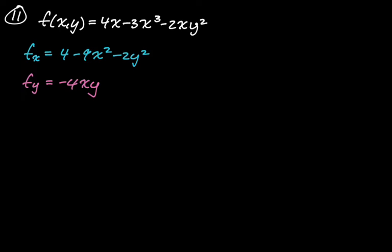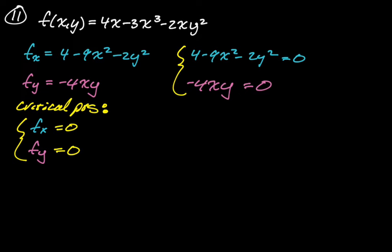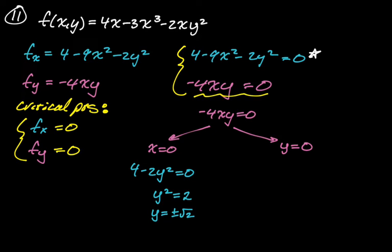To get critical points, we set both partial derivatives equal to zero. Starting with partial y: -4xy = 0 means either x = 0 or y = 0. If x = 0, the first equation becomes 4 - 2y² = 0, so y² = 2, meaning y = ±√2. That gives two ordered pairs: (0, √2) and (0, -√2).